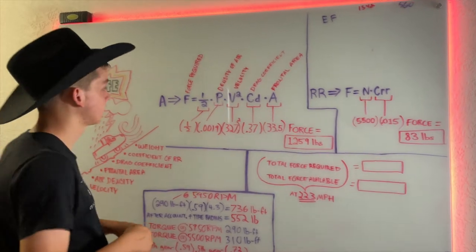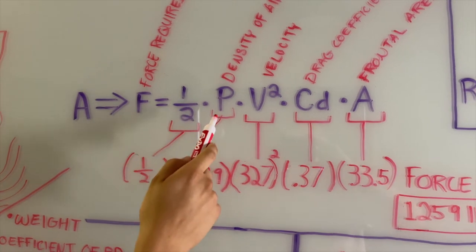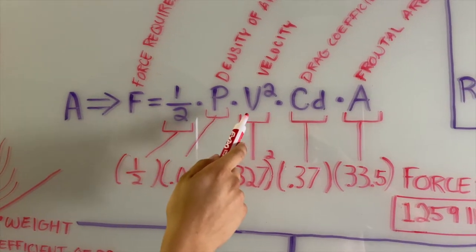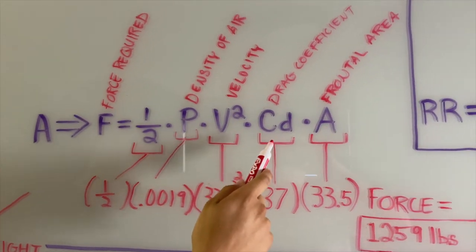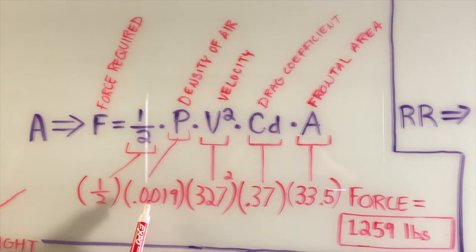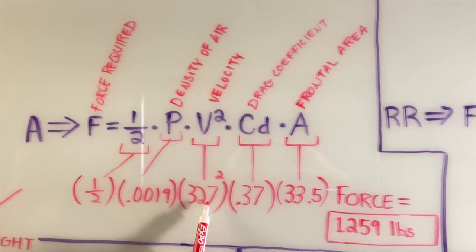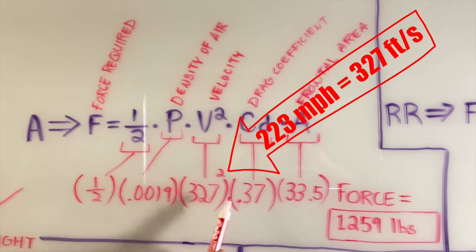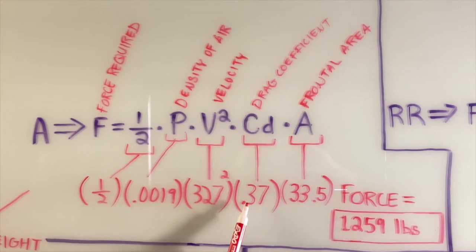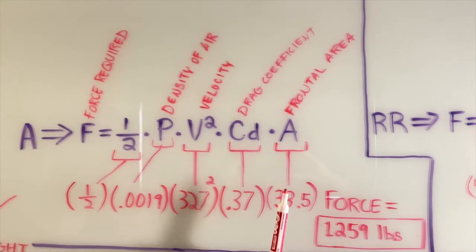The way you calculate aerodynamic drag is: one-half times the density of air times the velocity squared times the drag coefficient times the frontal area. In my case: one-half times 0.0019 slugs per cubic foot times 327 feet per second squared times 0.37 (our vehicle's drag coefficient) times 33.5 square feet (the frontal area of the vehicle).